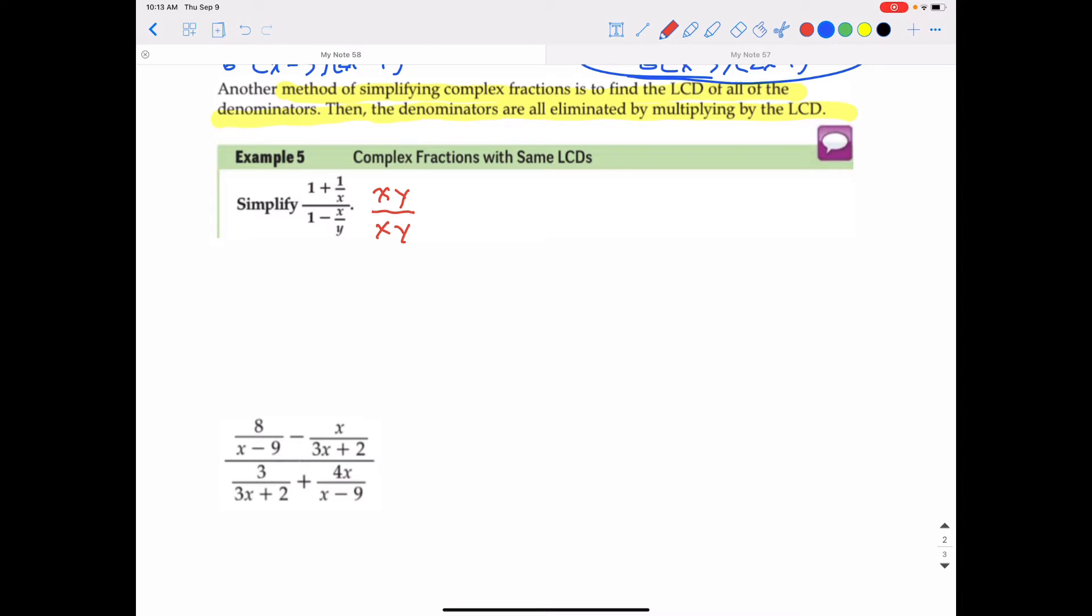So, I have to distribute that x, y into the 1 as well. And so, that's going to give me x, y. And then, when I take x, y times 1 over x, well, the x's are going to cancel, leaving me just plus y.